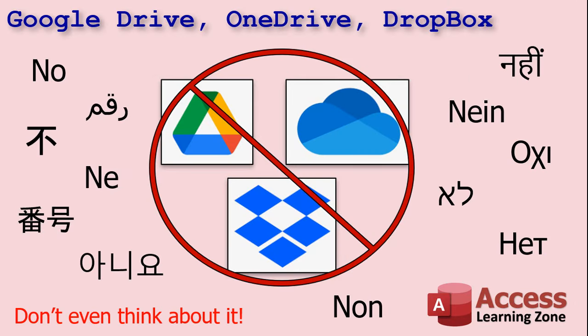A lot of people tell me they're trying to share their Access database using Google Drive, OneDrive, Dropbox, or one of those types of file sharing services. Do not do this. This is a big no-no. Access databases will not work reliably over these types of file sharing services — you will corrupt your database. Very, very bad. I love Google Drive and I use it all the time myself, but don't use it for an Access database.